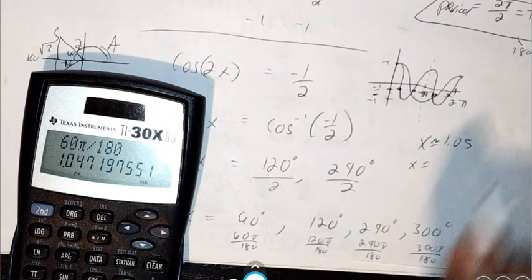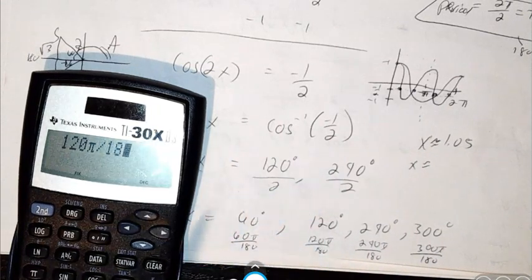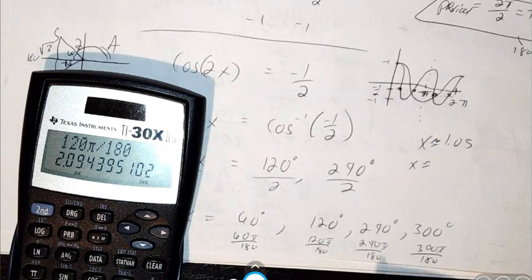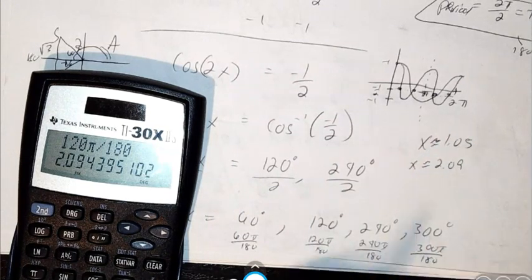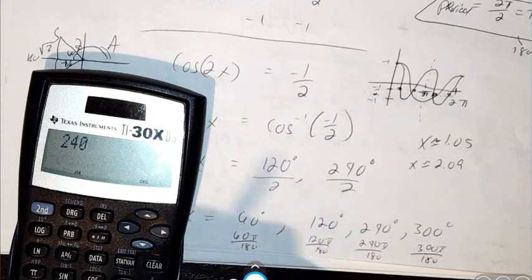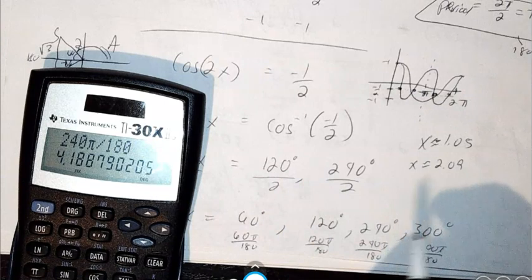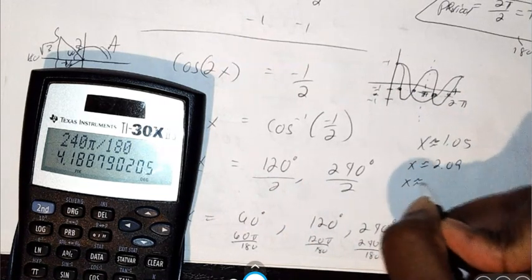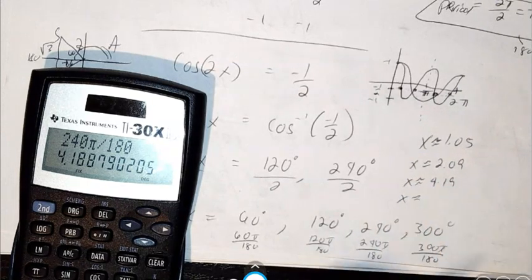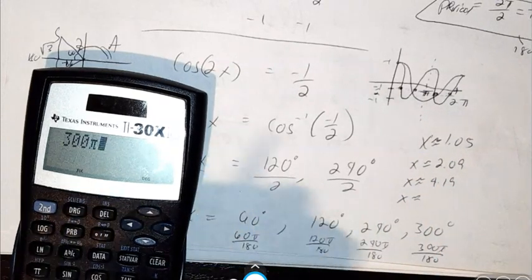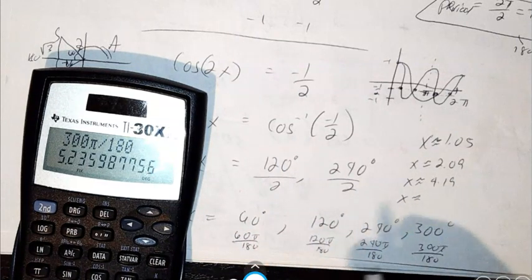X is about 120 pi divided by 180, which is 2.09. And then 240 pi over 180, which is 4.19. And then the final answer is about 300 pi over 180, so 5.24.